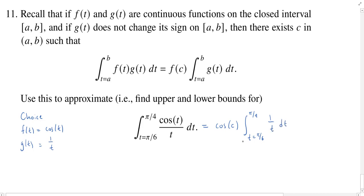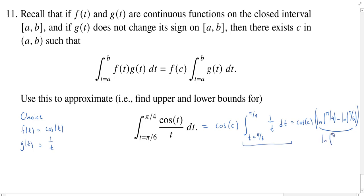We can actually compute this integral because we know an antiderivative for 1/t. This will end up being cosine of c times the natural log of π/4 minus the natural log of π/6 — so that's log(π/4) minus log(π/6). Using log properties, a difference of logs is the log of the quotient, so this becomes log of (π/4)/(π/6), which equals log of 6/4, or 3/2.